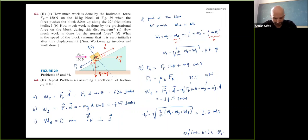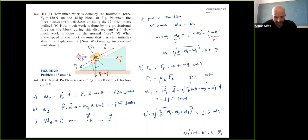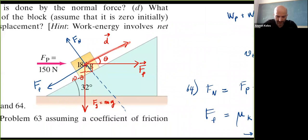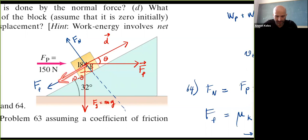If you really look at W_g = -mgd sin θ, this is actually -mgh, where h is the height gained. So we actually did account for what would later be called potential energy — we just didn't call it that. The minus sign comes from the fact that gravity's component along the displacement opposes the motion. Work is force dotted with displacement, and when force and motion are in opposite directions, work is negative. Thanks for coming — see you Monday!